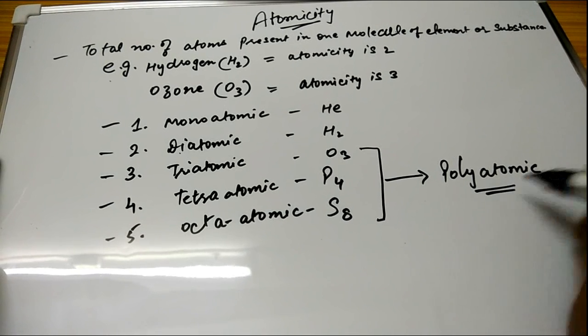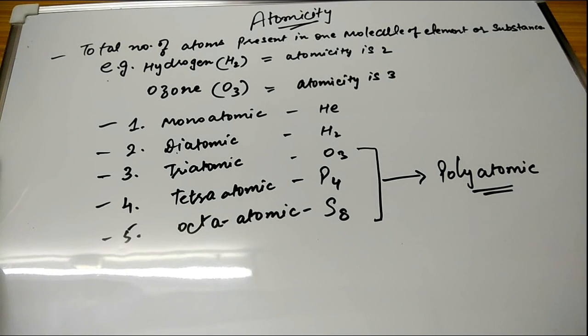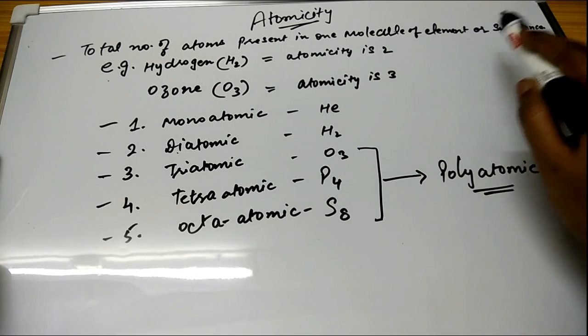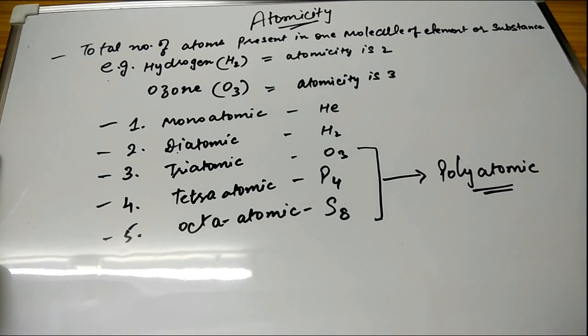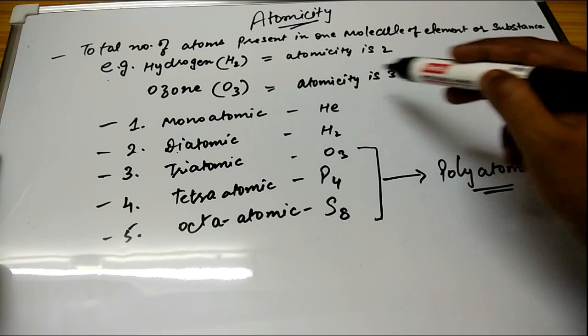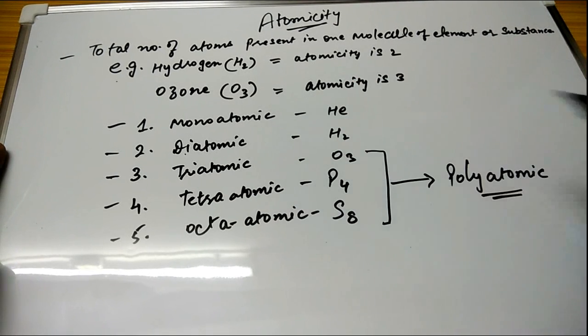So it is very easy. Once again to sum up, atomicity: total number of atoms present in one molecule of element or substance is known as atomicity. Examples like hydrogen and ozone with atomicity H2 is 2, O3 is 3. Similarly you can see the nomenclature: monoatomic, diatomic, triatomic, tetra-atomic and so on.